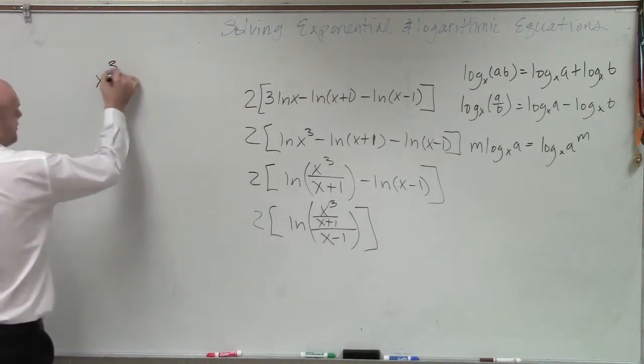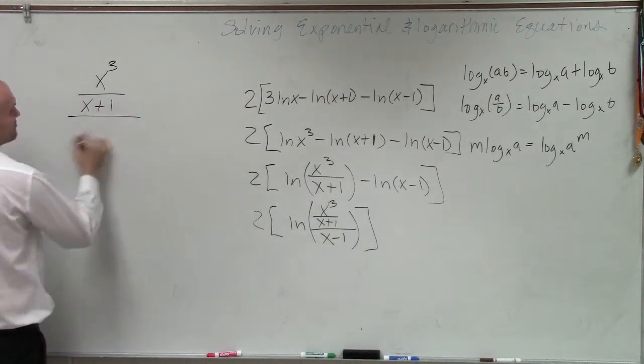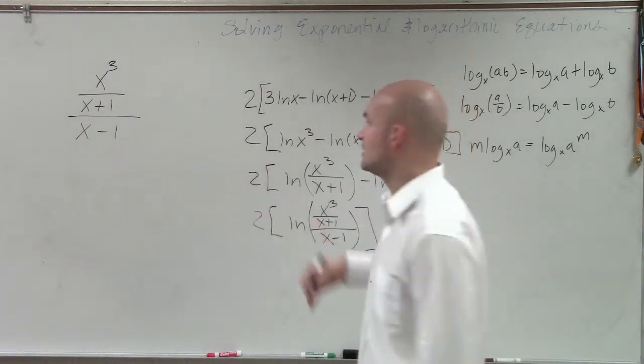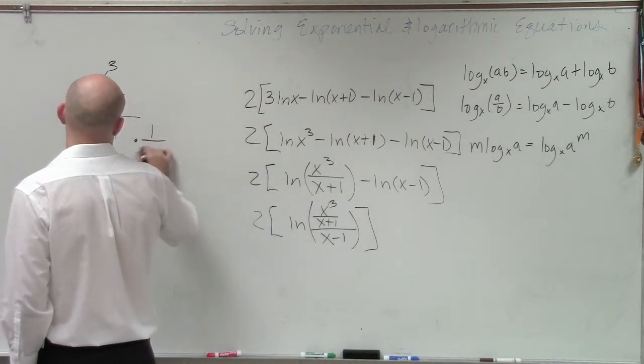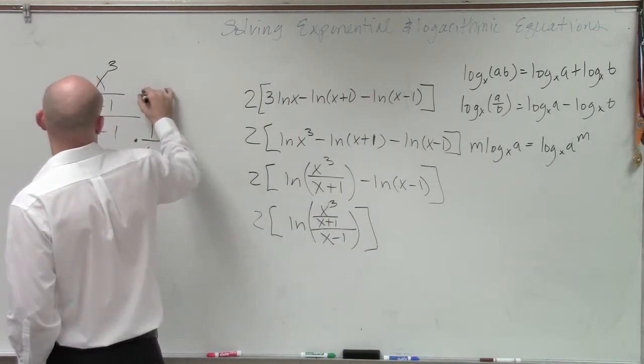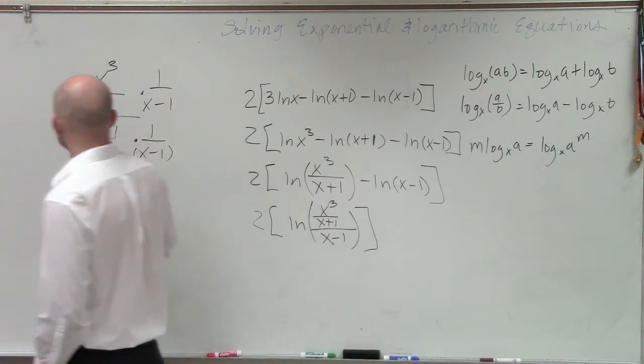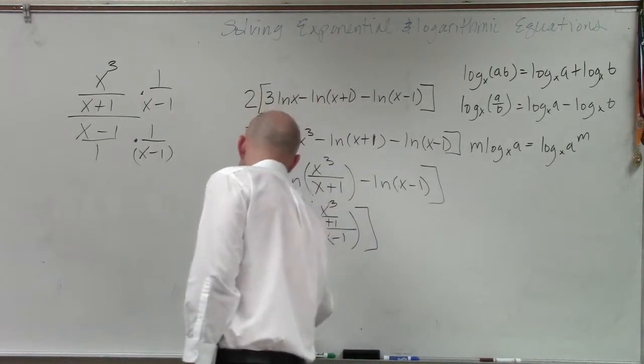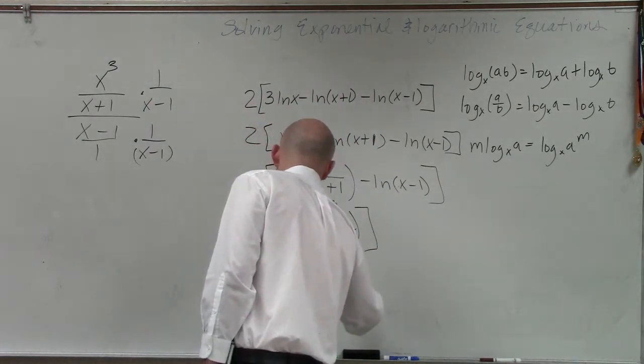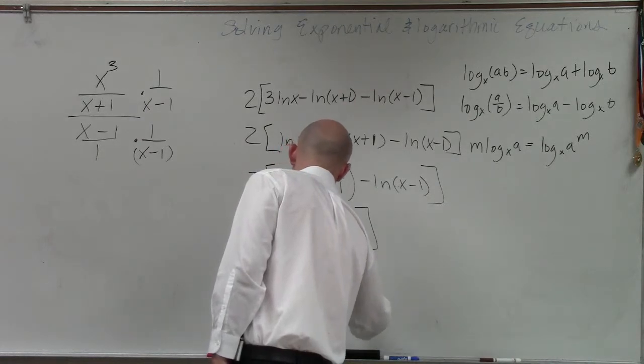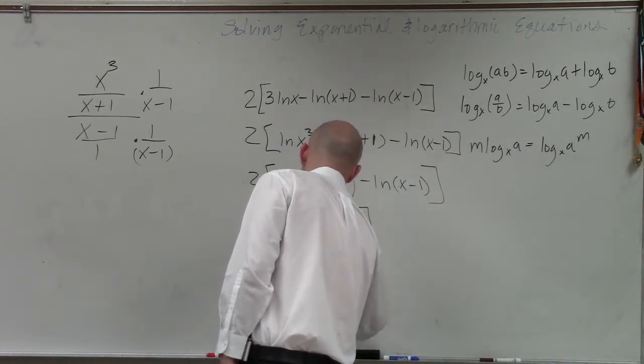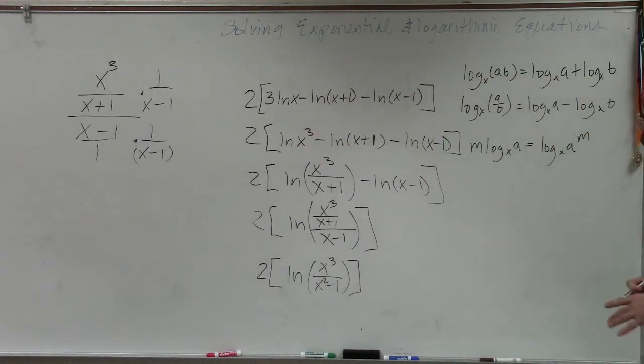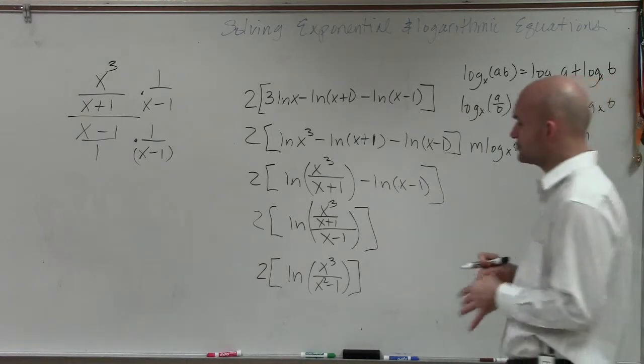So when you guys talked about rational expressions last year in Algebra 2, what we did is we talked about this. We can simplify this by multiplying by the reciprocal. Because my denominator I can rewrite as x minus 1. All right? So therefore, this becomes now 2 times ln of x cubed over x squared minus 1.